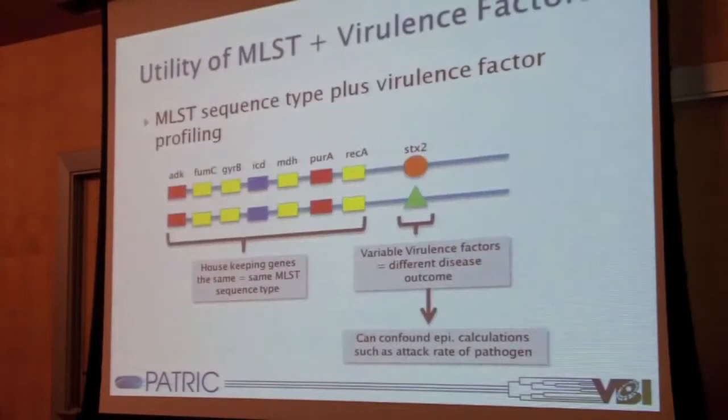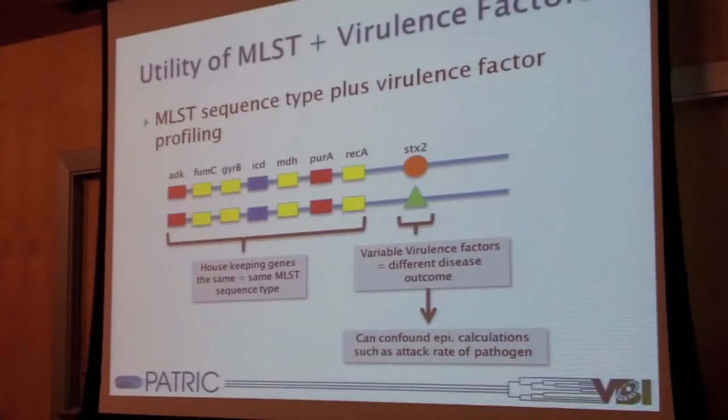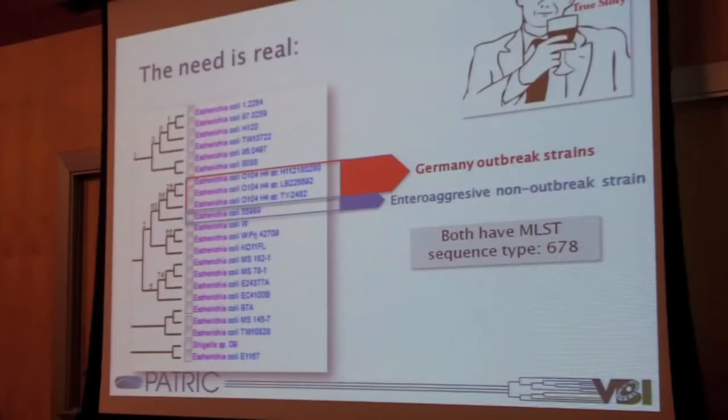As far as outbreak investigations are concerned, the real benefit of combining MLST sequence type with virulence genes is that it allows epidemiologists to sort out false positives within their samples. Sometimes there's variance within the virulence factors of strains that isn't reflected in the housekeeping genes, and that can affect disease outcome and have a confounding effect on calculations like attack rate of pathogenic strains. Variance within genes of the same MLST sequence type related to virulence is actually not all that uncommon.